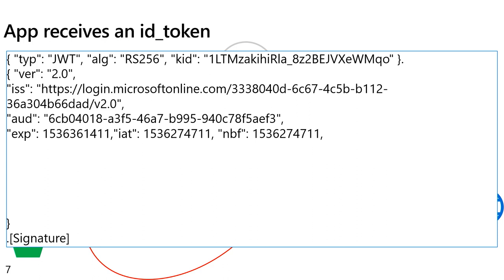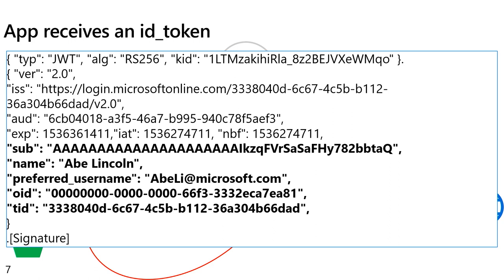The audience is your application object ID. So you register the application — that's a unique object ID — and you know this ID token is actually meant for you and not for somebody else. The token has an expiry, a not-before, and an issued-at time. There might also be other information like the name of the user or a preferred username. Subject is unique for this application for this user, and we provide an OID as well — unique for a user across all applications inside of the tenant. And there's a tenant ID.